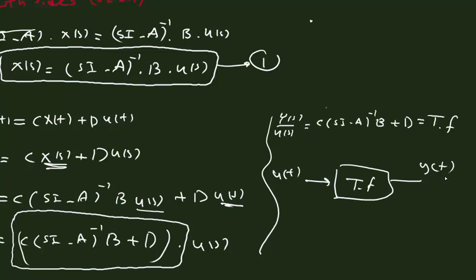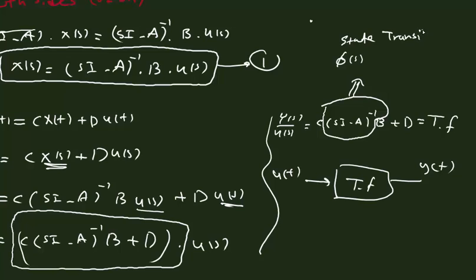By the way, the term (sI minus A)^(-1) is called the state transition matrix, or Phi(s). Thank you for watching, see you next time.